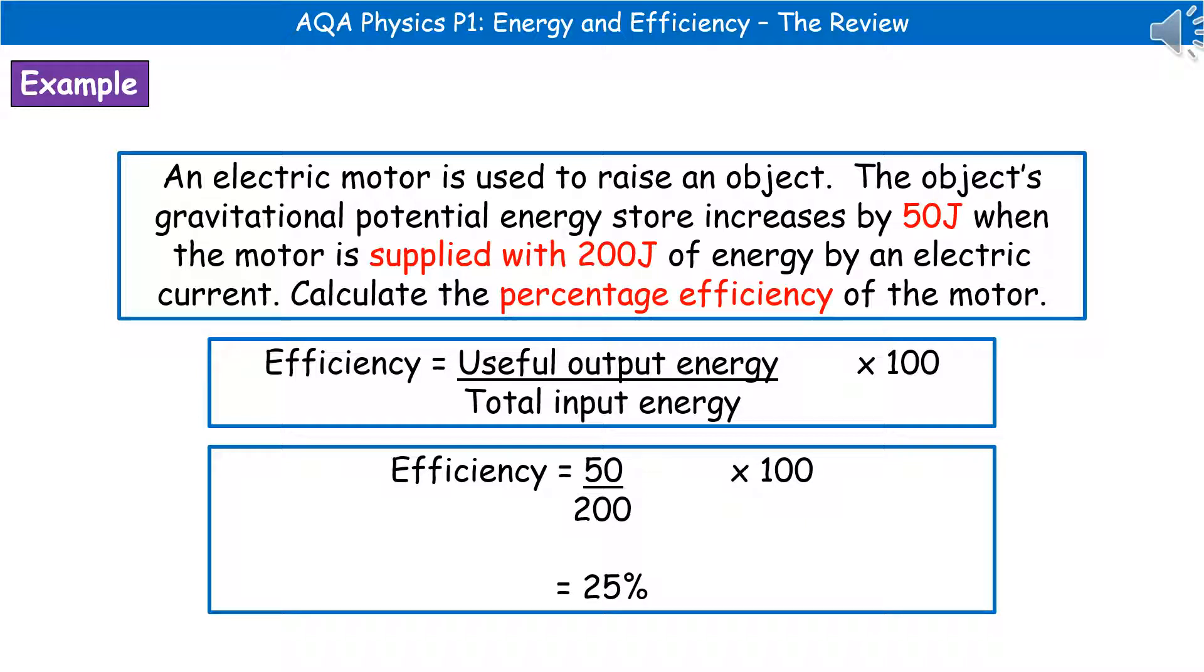And then we can substitute in the values from our question. So as we can see, the useful output energy, so the energy that's going into the gravitational potential store is 50, and it's been supplied with 200. So 50 divided by 200 times by 100 gives us 25% as the answer.